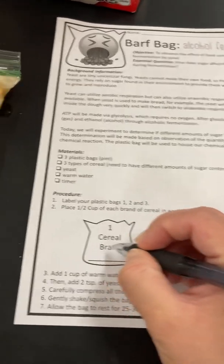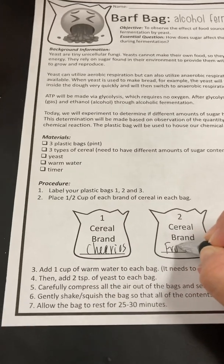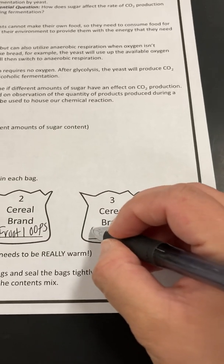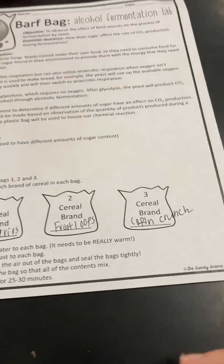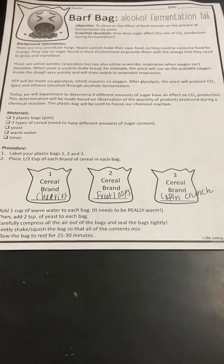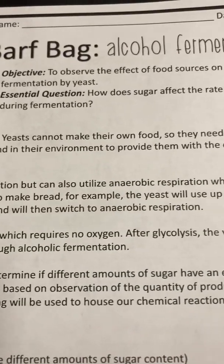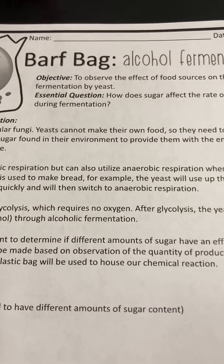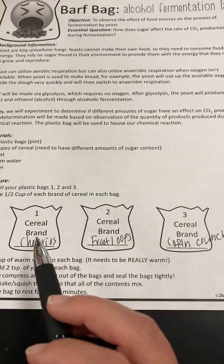The cereal brands — we'll just write those in: Cheerios, Froot Loops, and Captain Crunch. Looking at these three cereal brands, I want you to think to yourself which one of these cereals do you think would have more sugar. Because if you read the essential question, what we're looking for is how does sugar affect the rate of CO2 production during fermentation? So ask yourself which one of these three would have the most sugar and which would have the least sugar.